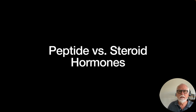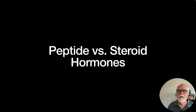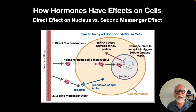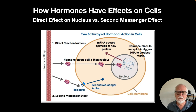Now let's talk about the two major classes of hormones: peptide versus steroid hormones. It's not really important to understand how they are structurally different chemically, but their functional differences do matter. Hormones affect specific cells in two different ways: one is a direct effect on the nucleus of the cell, and the second is through a second messenger effect.